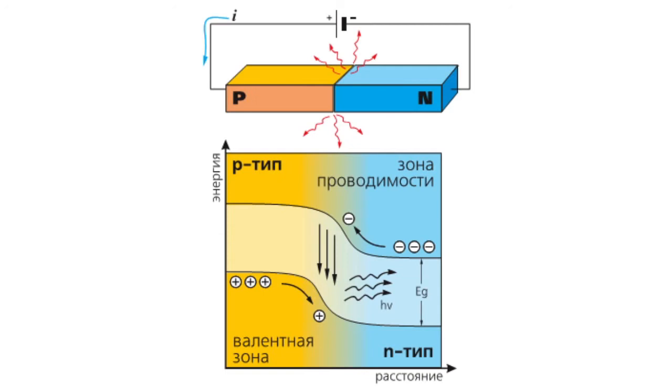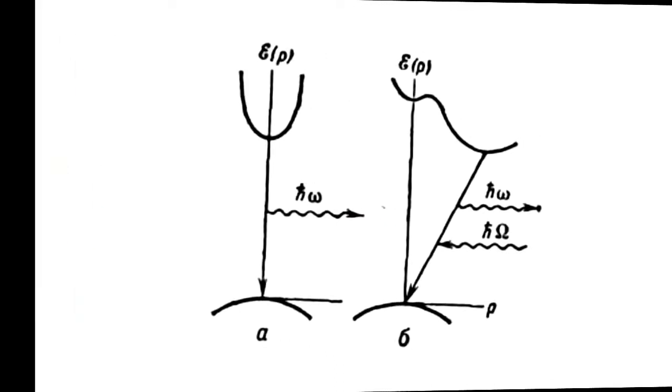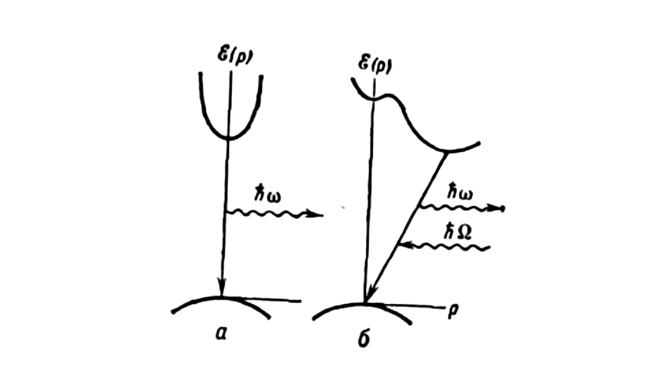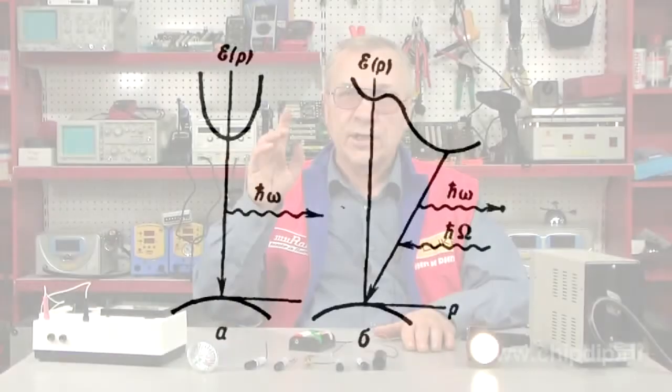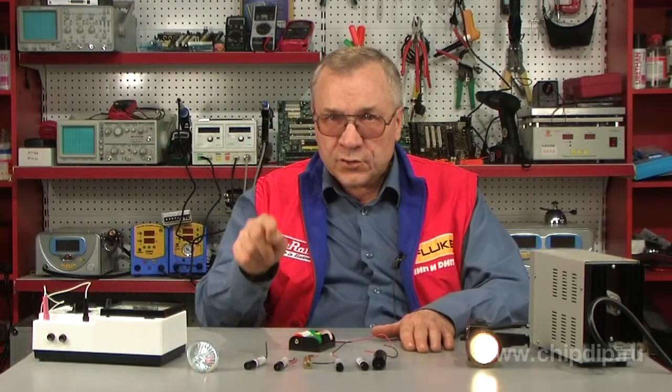Indirect gap semiconductors have the top of the valence band and the bottom of the conduction band dispersed in the space of wave vectors. So a photon with big quasi-momentum also has to be emitted so that the law of conservation of momentum is fulfilled. Thus the probability of radiative recombination is significantly small in this case.